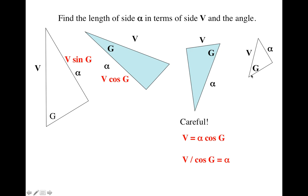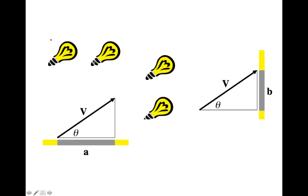Let's do the very last one. You're looking for alpha the side in terms of V and G. You notice alpha is opposite, so alpha is going to be V sine G. To get fast at this stuff: if you're looking at the side that's adjacent to the known angle, you get the projection adjacent to the known angle by using cosine. If you want the opposite side, you're going to use sine. Hopefully that helps — it'll make you pretty quick at trigonometry.